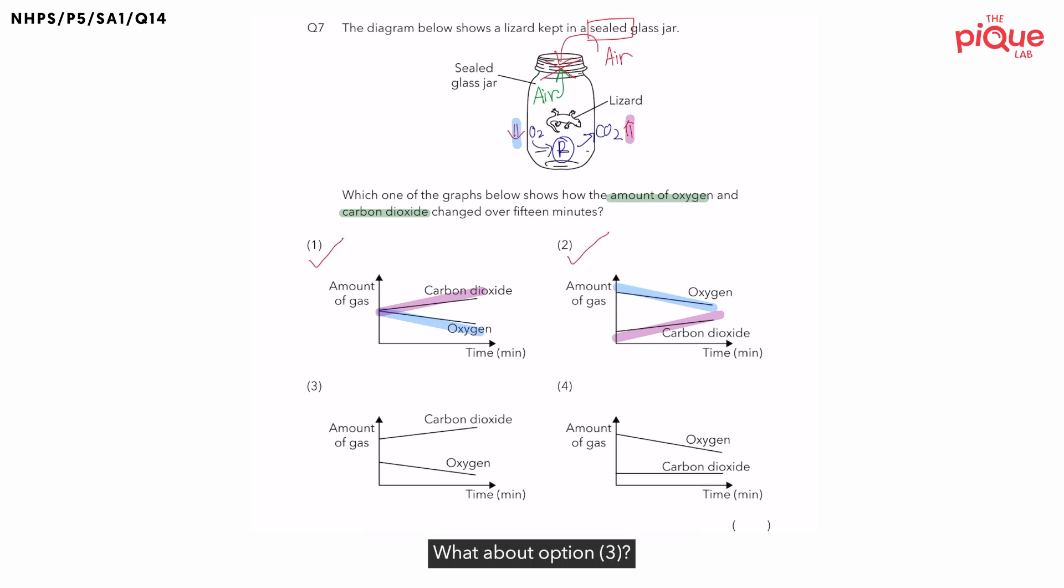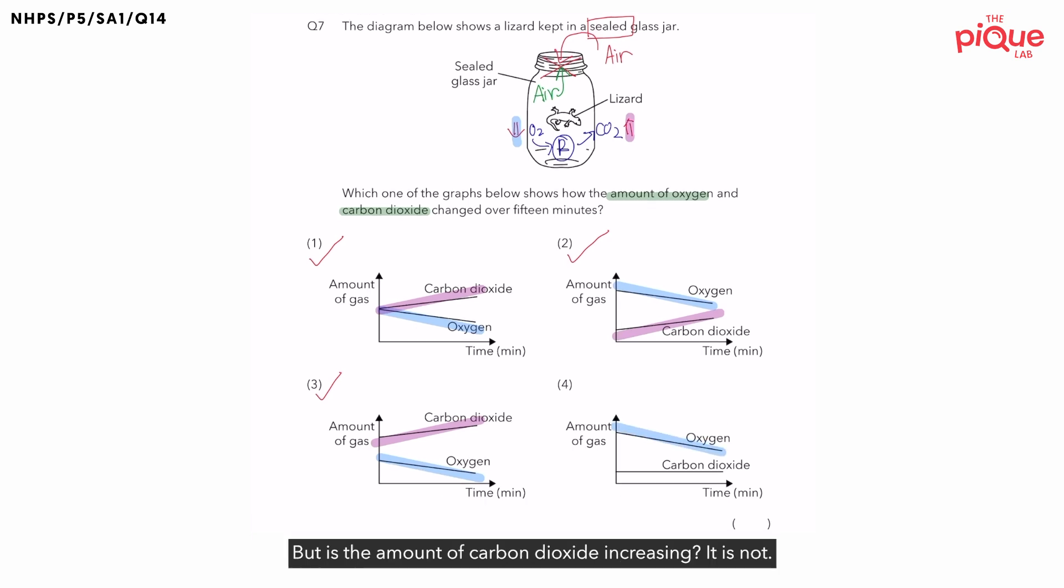What about option 3? Is the amount of oxygen decreasing? Yes. Amount of carbon dioxide increasing? Yes. Therefore, we give 3 a tick as well. Let's take a look at option 4. Is the amount of oxygen decreasing? Yes. But, is the amount of carbon dioxide increasing? It is not. Therefore, option 4 is wrong. That means I have 3 correct answers for this question. There must be something that we are missing.